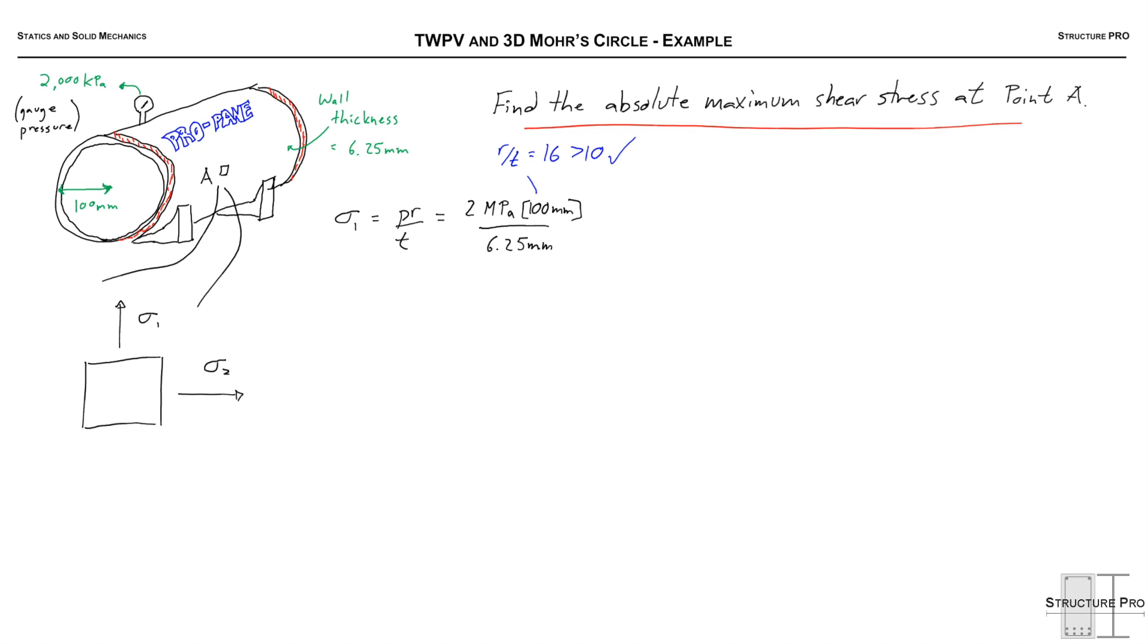Sigma 1 comes out to be 32 MPa. We know that sigma 2 is just half of that for a cylindrical thin-walled pressure vessel, so 16 MPa.